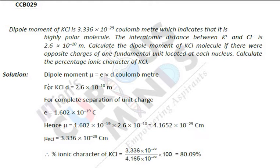Hello everyone, let's see our next example of chemical bonding. The dipole moment of KCl is 3.336 × 10⁻²⁹ coulomb metre, which indicates that it is a highly polar molecule. The interatomic distance between K⁺ and Cl⁻ is 2.6 × 10⁻¹⁰ m.